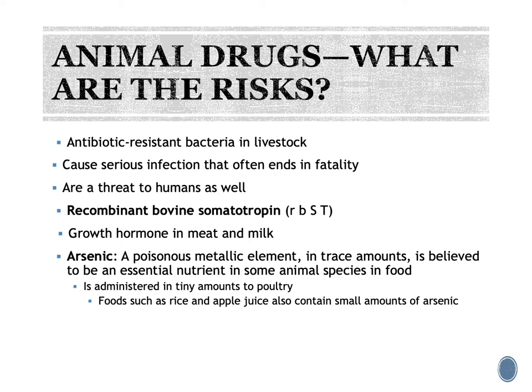Arsenic is a naturally occurring element from the earth's crust, and we think we actually require a little bit of it, but it is an infamous poison. It is given in very small, minute amounts to poultry to kill the parasites that would stall their growth, but it can build up in poultry meat and that adds to the arsenic content of our water, soil, and food supply. So that's something to keep an eye on.